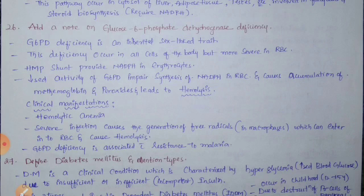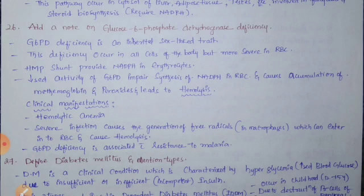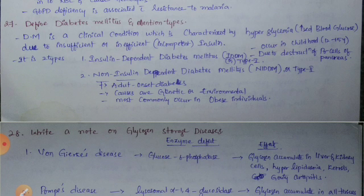Clinical manifestations include hemolytic anemia. Severe infection causes generation of free radicals in macrophages, which can enter RBCs and cause hemolysis. It is also associated with resistance to malaria.